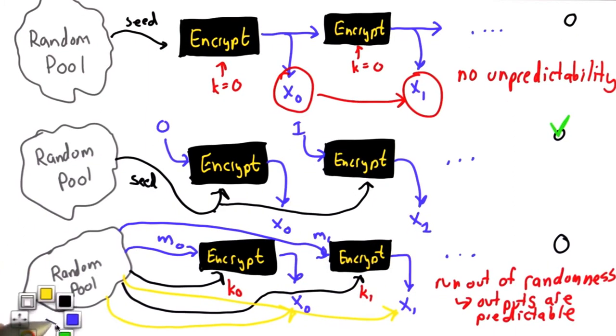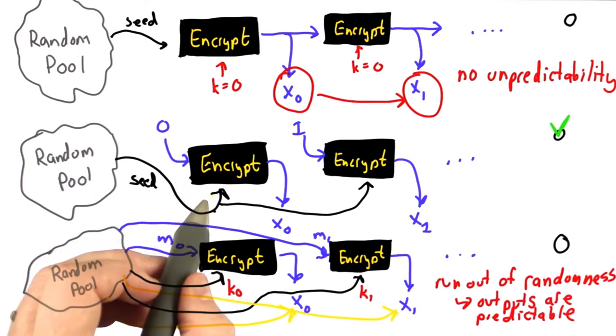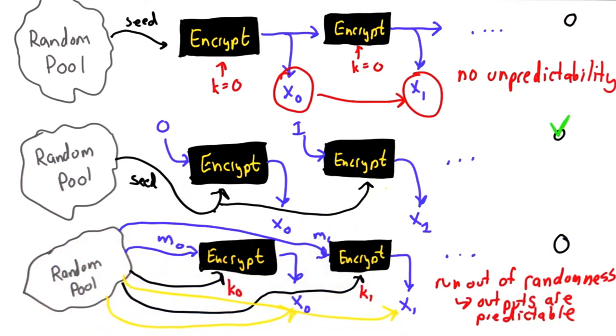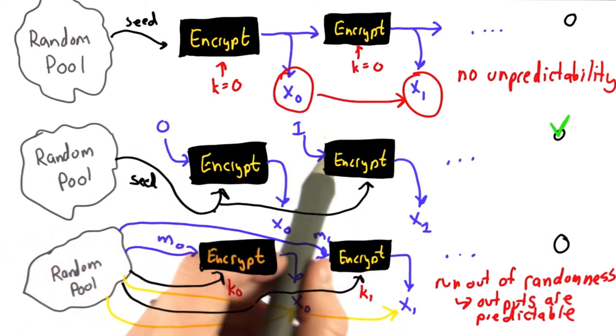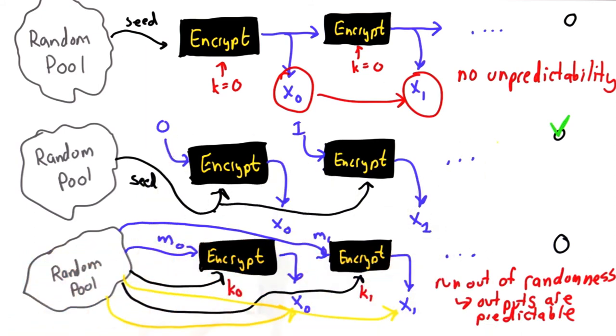The best solution is this middle one where we're extracting a seed once, we're reusing that seed, and we're encrypting a sequence of values, which can just be a counter, and each time using the output of that encryption.